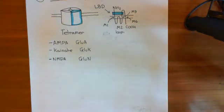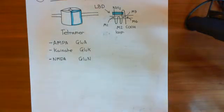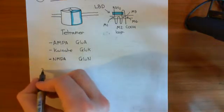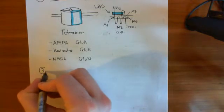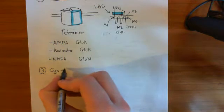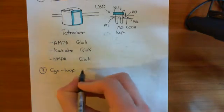Welcome back to this next video in which we are discussing ligand-gated ion channels. We've already seen two families of ligand-gated ion channels, namely the P2X receptor-like family and the glutamate receptor-like family. Now what we're going to discuss is the third and final family of ligand-gated ion channels, which is the cis-loop ligand-gated ion channels.